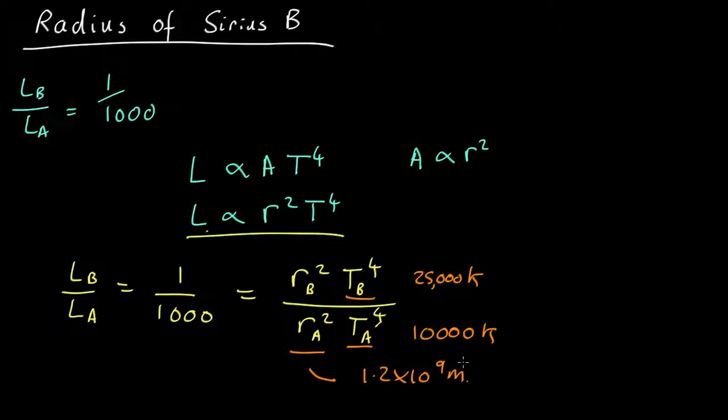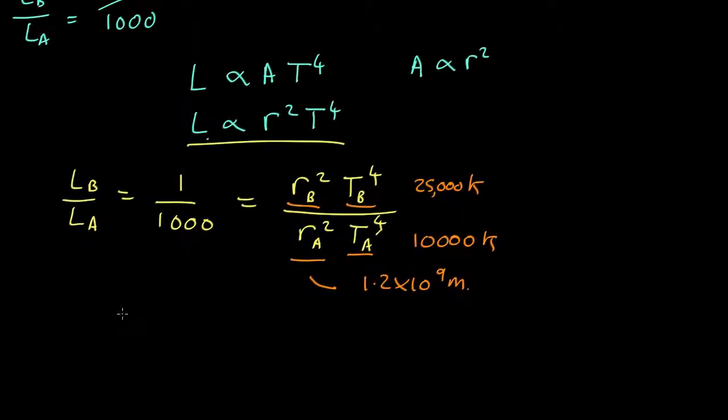So, let's rearrange this. What we don't know is the radius of Sirius B, so let's rearrange it. So, we have that r_B² equals L_B over L_A times r_A² times T_A⁴ all over T_B⁴.